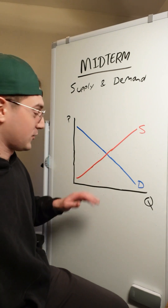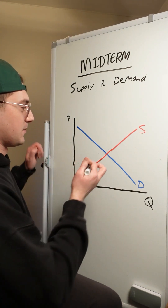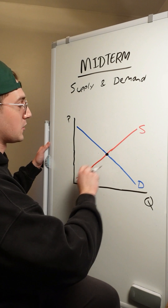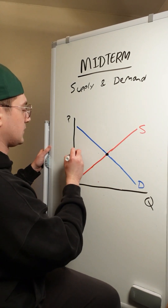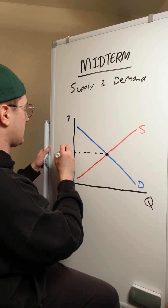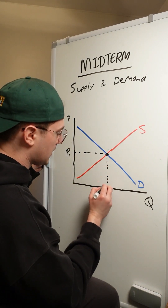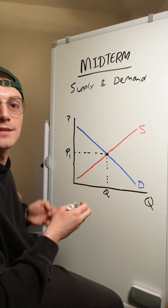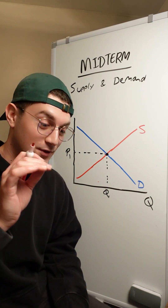For starters, I want to make sure you understand equilibrium. Super simple — it's that intersection point between the current supply and demand curves, resulting in price P1 on the y-axis and quantity Q1 on the x-axis. That's literally it for the first point.